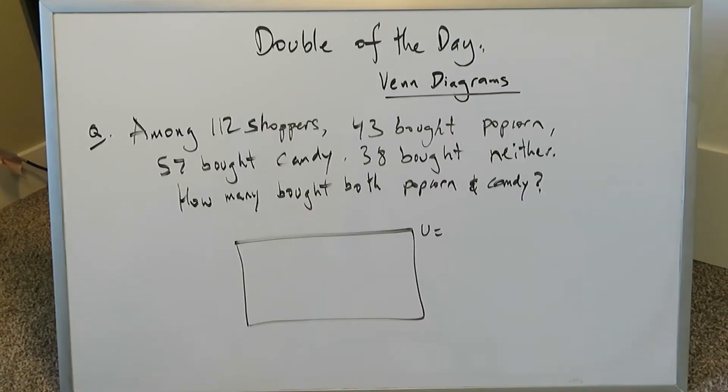Let's look at the second and last question of this video, and again we will endeavor to do this in an easy and practical manner. We have 112 shoppers, 43 of whom bought popcorn and 57 who bought candy, but there are 38 shoppers who bought neither popcorn nor candy. How many bought both popcorn and candy?